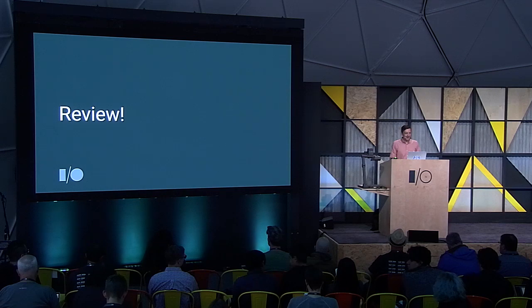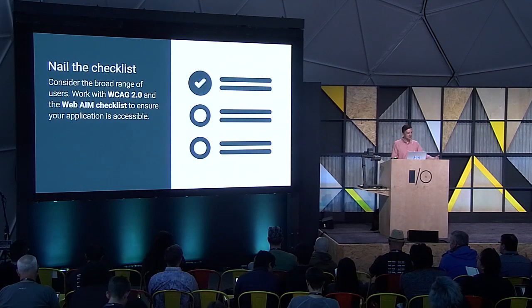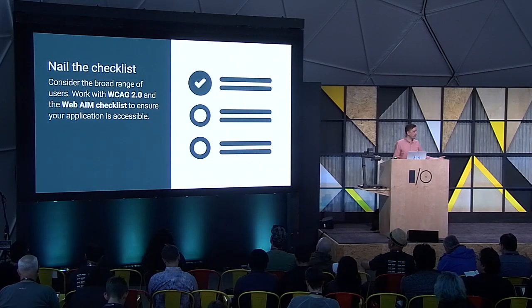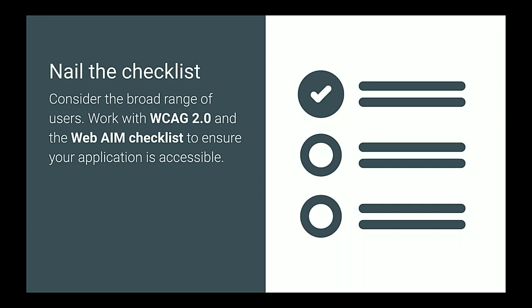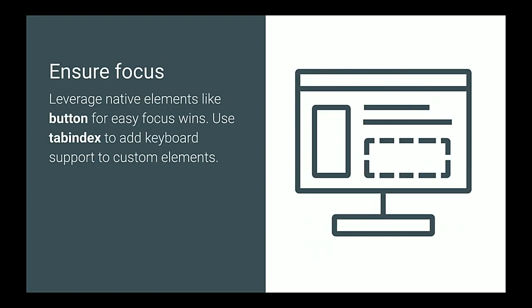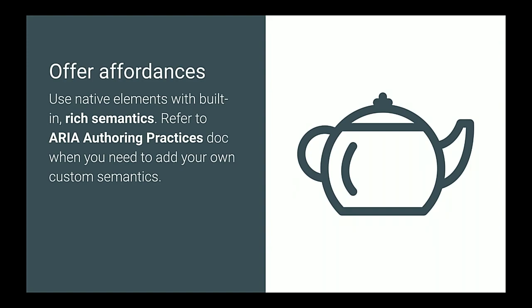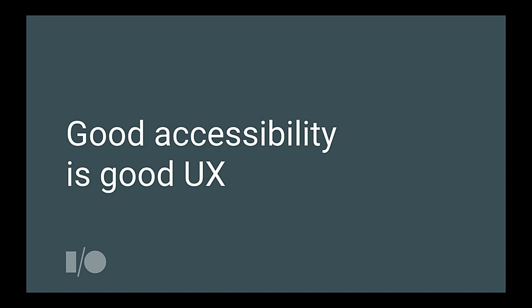Wrap up. We covered three major areas today. First, understand that diverse range of users out there — learn the WCAG, familiarize yourself with the WebAIM checklist, figure out your primary user journeys and make sure you can check off the relevant checklist items. You also want to make sure all your interactive controls can be reached with the keyboard — use native elements whenever possible because they're implicitly inserted in the tab order, but if you need to create your own controls, add keyboard support back in using tabindex. Similarly, offer good affordances — use native elements for rich semantics, and if you need to go off-road, use the ARIA design patterns doc and apply the correct ARIA attributes. The main takeaway: good accessibility is good UX.